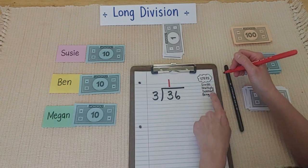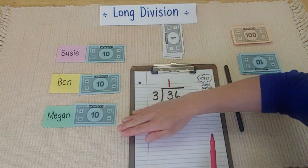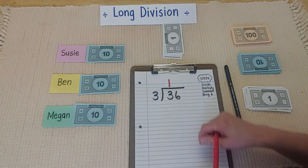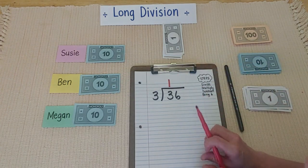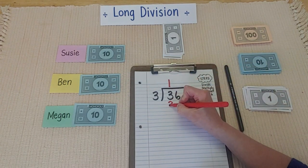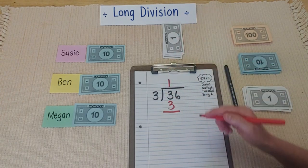Now, down below comes the next step, multiply. I'm going to multiply to see how many 10s I used all together. So, one 10 times three gives me three. Three 10s. I used that many 10s so far.